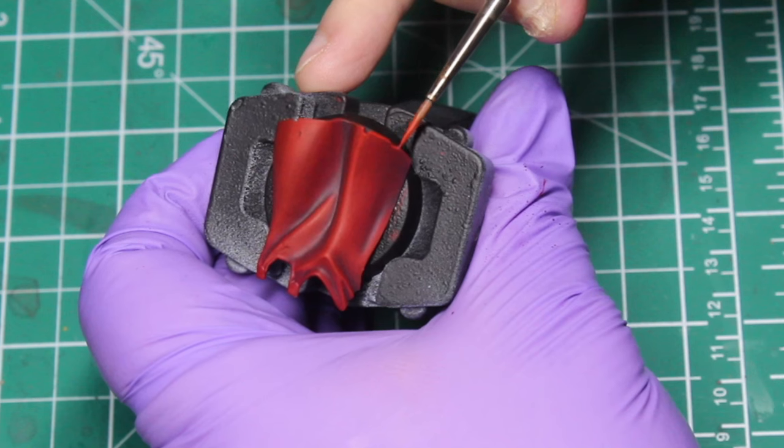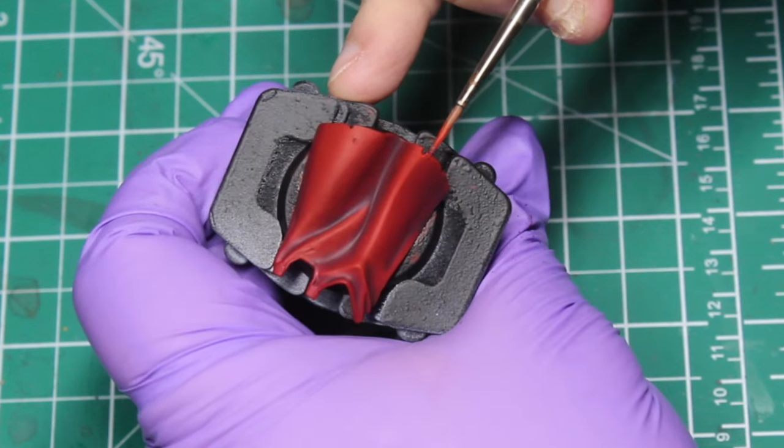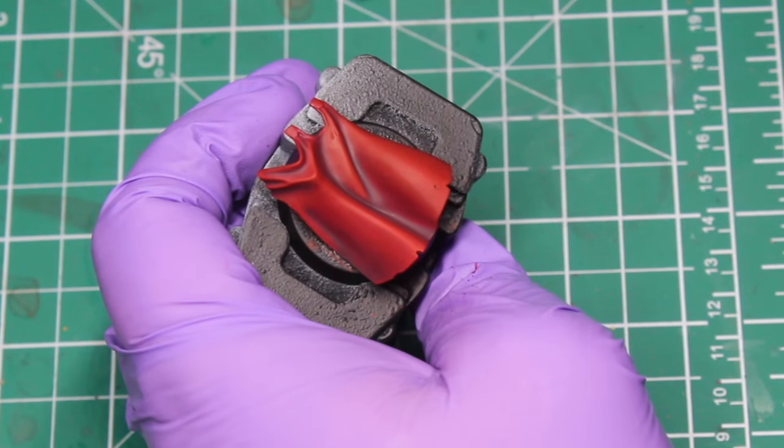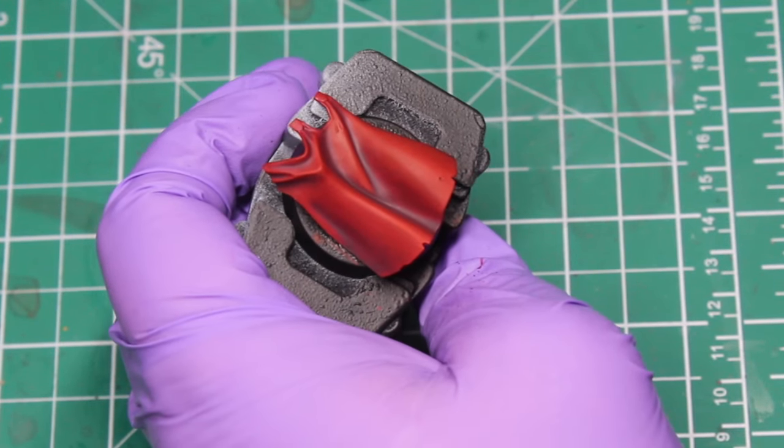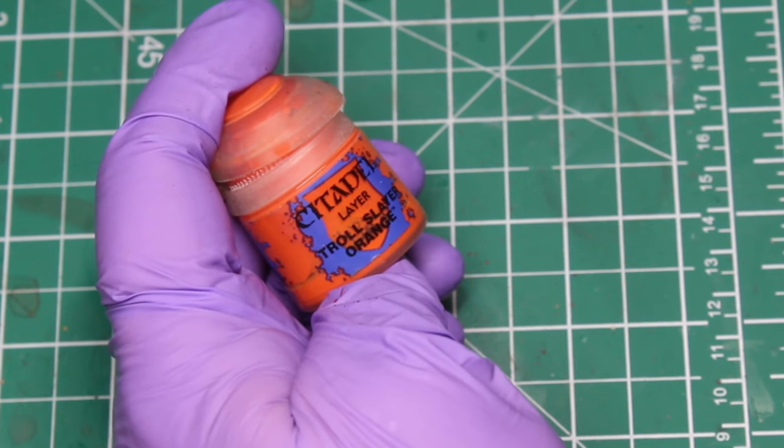As you can see, I'm obviously picking out all of the edges and the little cracks and rips and tears and the little holes and things like that. Once you've done that, we're going to be pushing those highlights a little bit more with Trollslayer Orange.